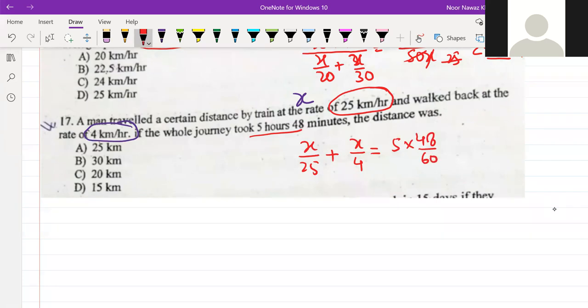So finding the common denominator: 4 and 25, the LCM is 100. This becomes 29x upon 100 equals 29 by 5.